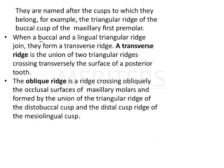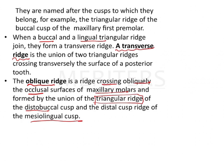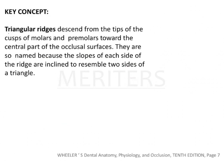When buccal and lingual triangular ridges join, they form a transverse ridge. The oblique ridge is a ridge crossing obliquely the occlusal surface of maxillary molars, formed by the union of the triangular ridges of the distal buccal cusp and the mesolingual cusp. All this information is very important for your exam and is frequently asked.